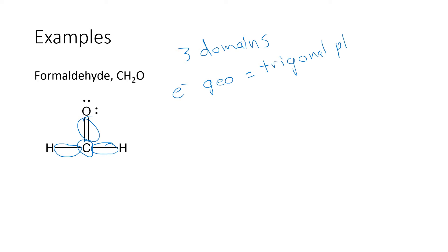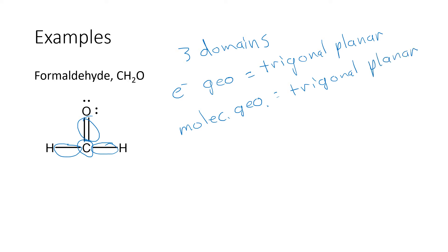When you look at that central atom, all of the domains are bonding domains. There are no lone pairs, and so the molecular geometry is the same — it is trigonal planar as well. To draw the trigonal planar structure, I'm going to draw the central carbon atom, draw the double bond and each of the single bonds as regular lines pointing towards the corners of an equilateral triangle, putting an oxygen up there, a hydrogen down here, and a hydrogen down here. All three of these bond angles are 120 degrees.